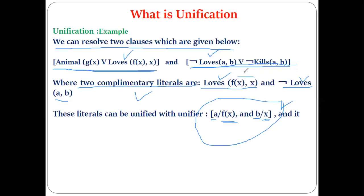When defining the predicate symbol: for example, if one expression has predicate 'animal' and another has predicate 'kill', these predicate symbols are not similar, so you cannot perform unification. But here 'loves' appears in both, so we perform unification there. That is the meaning of having the same predicate symbol. Negation doesn't matter — just concentrate on the predicate symbol.